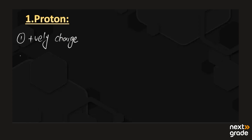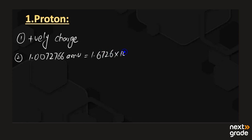The second property is the mass of the proton. If we look at the mass in atomic mass units, it is almost 1.0072766 amu. And if we convert this mass into kilograms, it will be 1.6726 × 10⁻²⁷ kg.